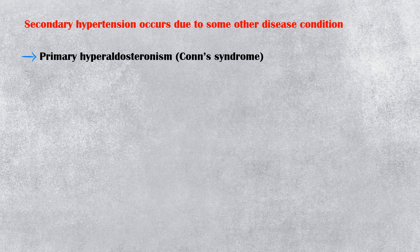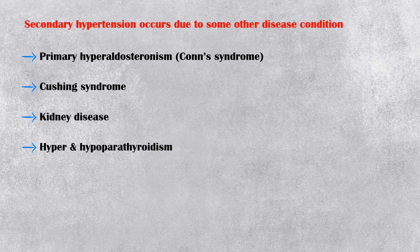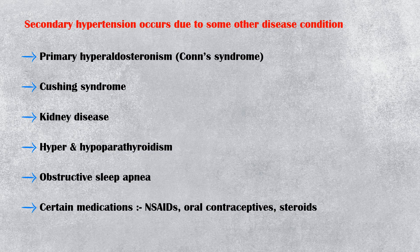Secondary hypertension occurs due to some other underlying disease condition. Some of these conditions include primary hyperaldosteronism, also known as Conn's syndrome, Cushing syndrome, kidney disease, hyper and hypoparathyroidism, obstructive sleep apnea, and certain medications, including non-steroidal anti-inflammatory drugs, oral contraceptive pills, and steroids.